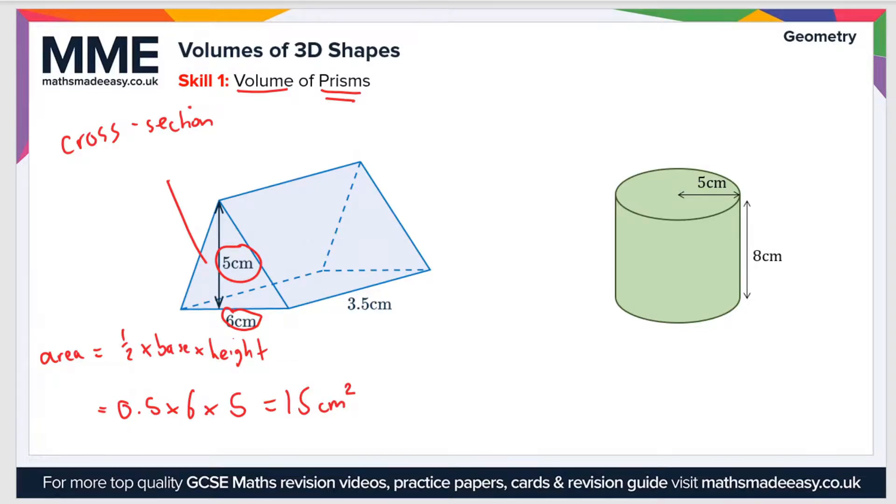Then if we want to work out the volume of the prism, all we do is multiply this value of 15 by the length of the prism. So that gives us 15 times 3.5 equals 52.5. So that's a volume, and we measure volume in centimeters cubed in this case, because the values in the question are given in centimeters.